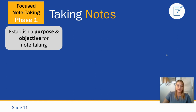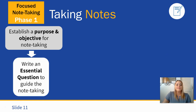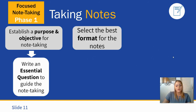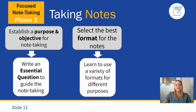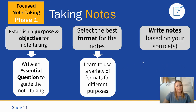Phase one — taking notes: make sure that you establish a purpose and objective for your note-taking and write the essential question to guide your own note-taking. Your teacher may not always provide you with an essential question, so it's important that you guide yourself through those inquiry principles. Select the best format for your notes. We are reviewing strictly Cornell notes, but you will evolve into focus notes which will be your own style, using a variety of formats. Always have your own system to fall back on.